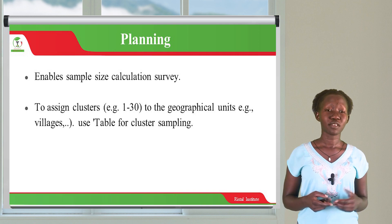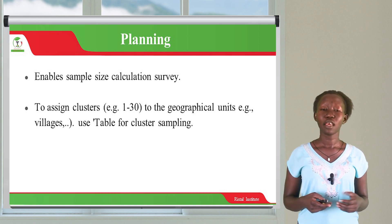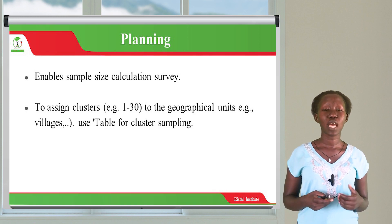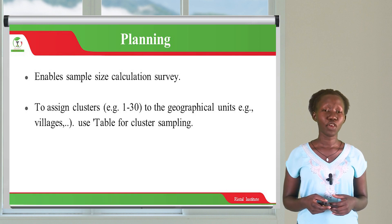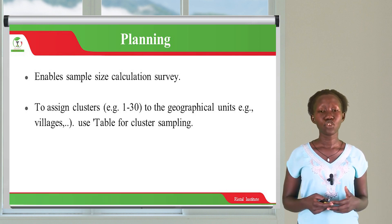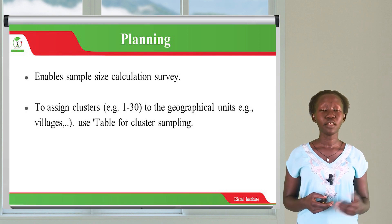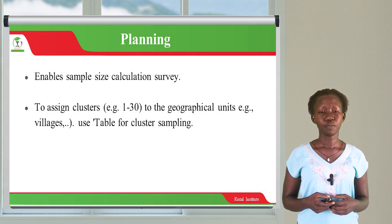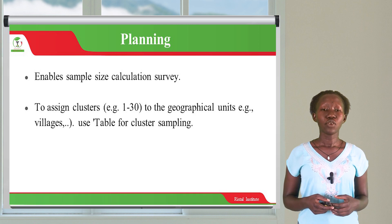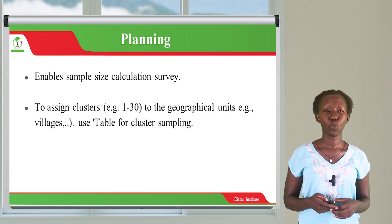Planning enables the sample size calculation and helps you to also assign clusters. For example, if you're looking at numbers from 1 to 30 in your geographical units, you're able to assign your clusters 1 to 30. You can also use the table for cluster sampling, which is also provided in the software.